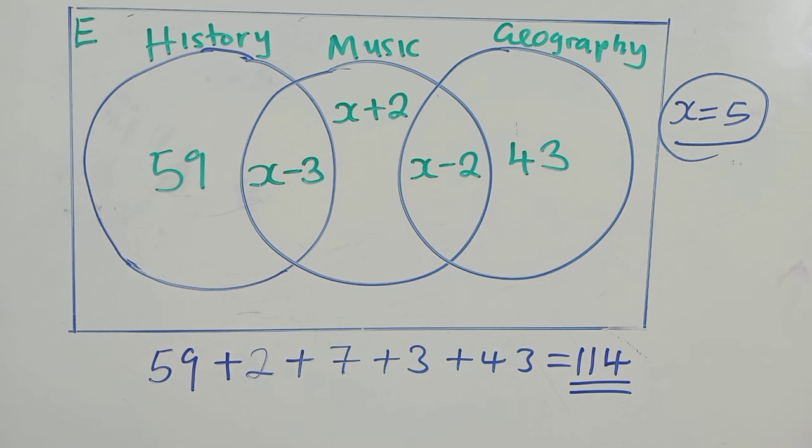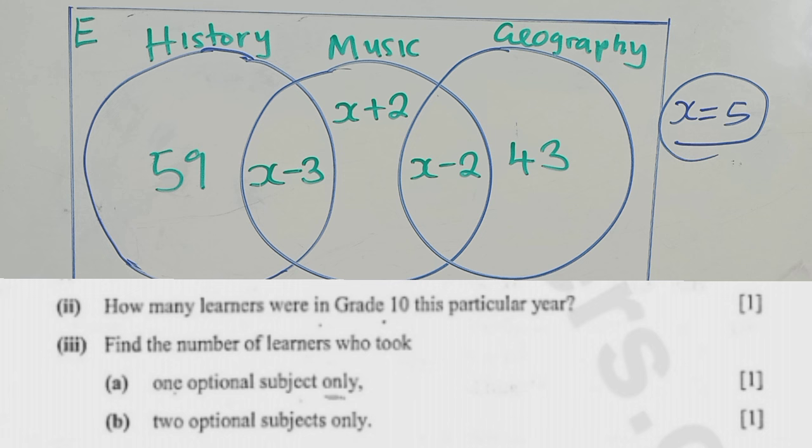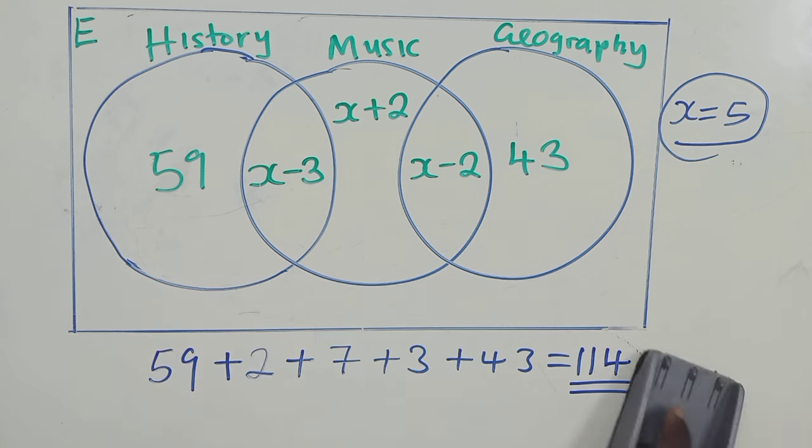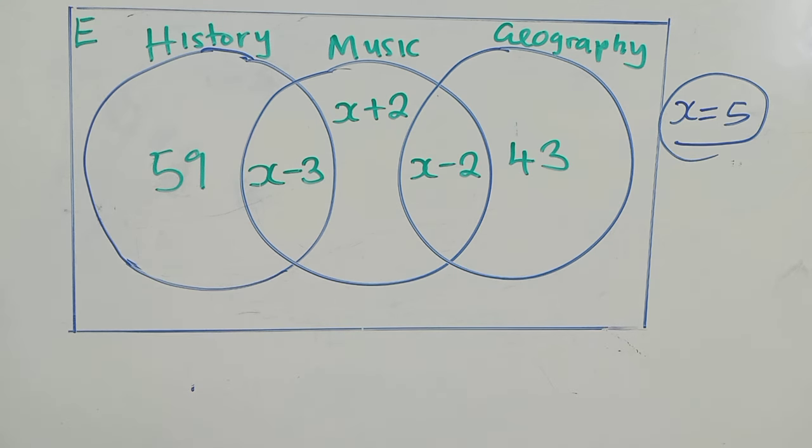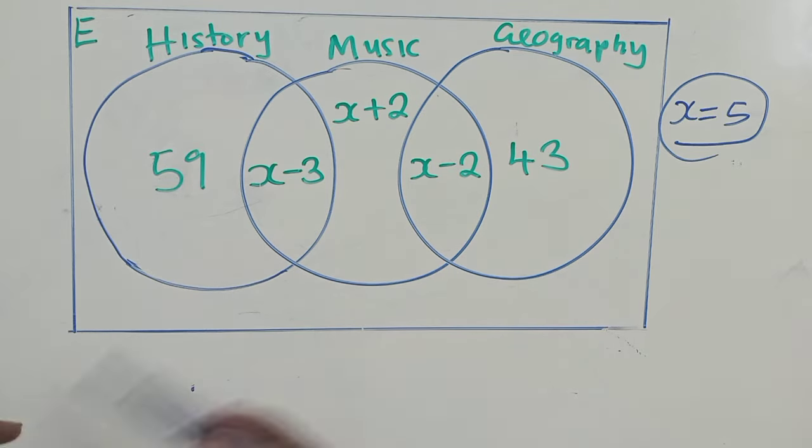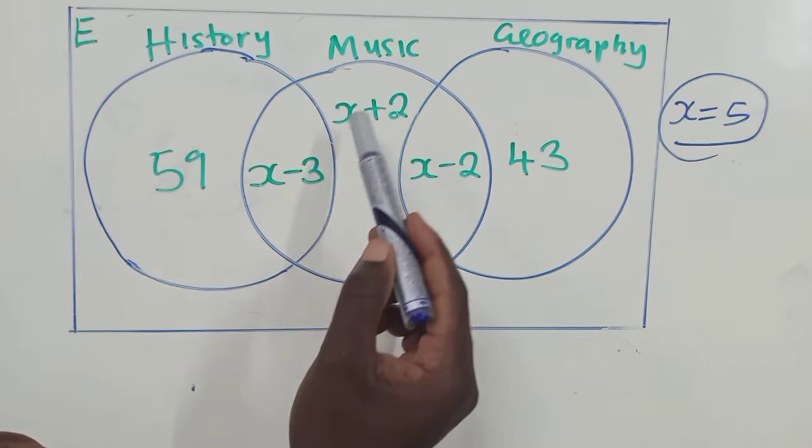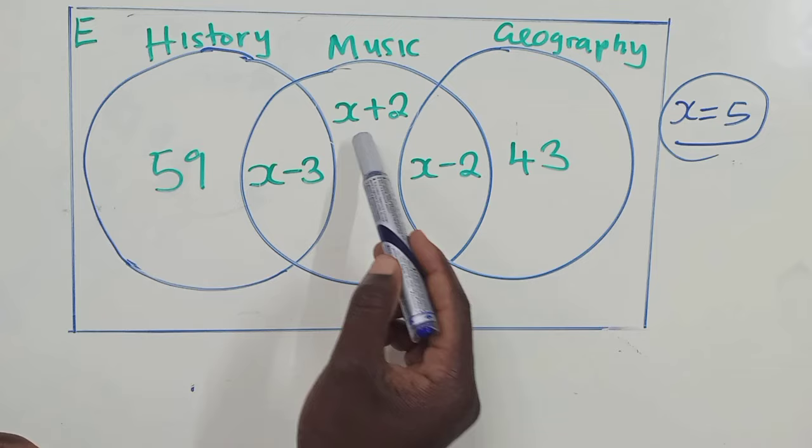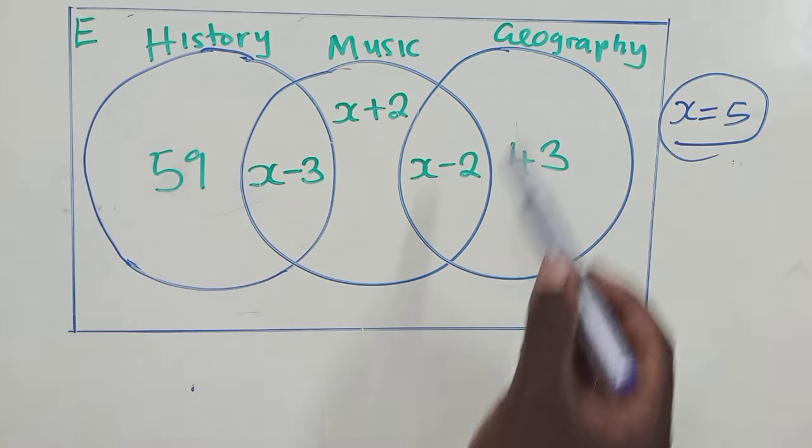We go to the next question. The next question reads, find the number of learners who took one option only. One option only. So one option only. We have this option here, it's only. We have this option, it's only. They just took music, those who are right here. Those who are here, where they took geography.